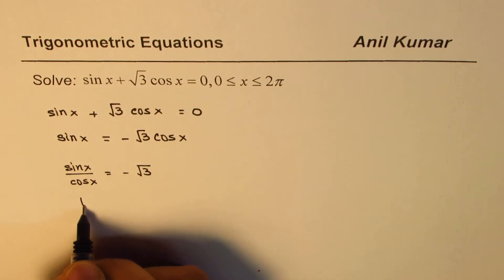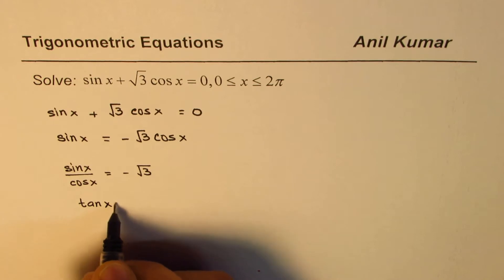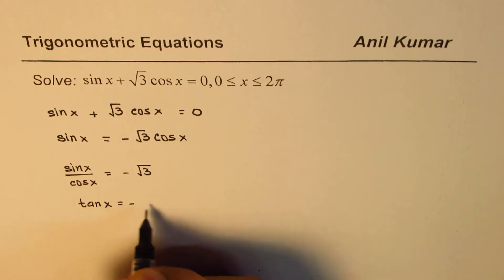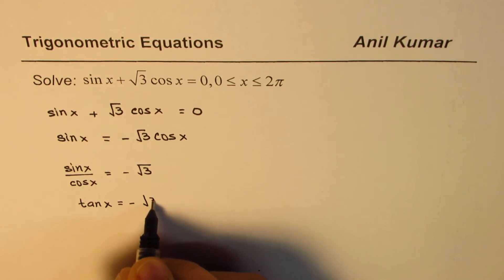Sin x over cos x is really tan x, so tan x equals minus square root 3.